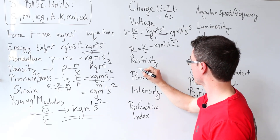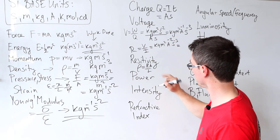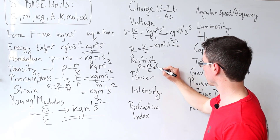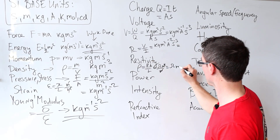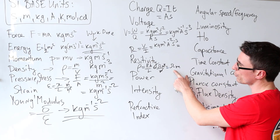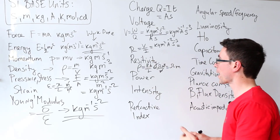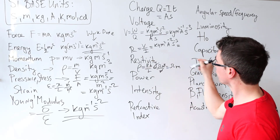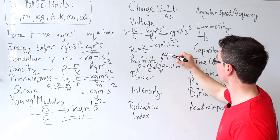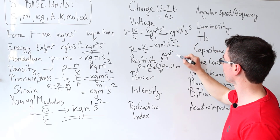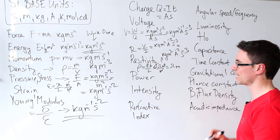Resistivity is given by R times A divided by the length — ohms times meters squared divided by meters — so that's just ohm meters. Therefore the base unit of resistivity is the same as the ohm, but multiplied by meters. What's left is kilograms meters cubed A to the power of minus two s to the power of minus three.